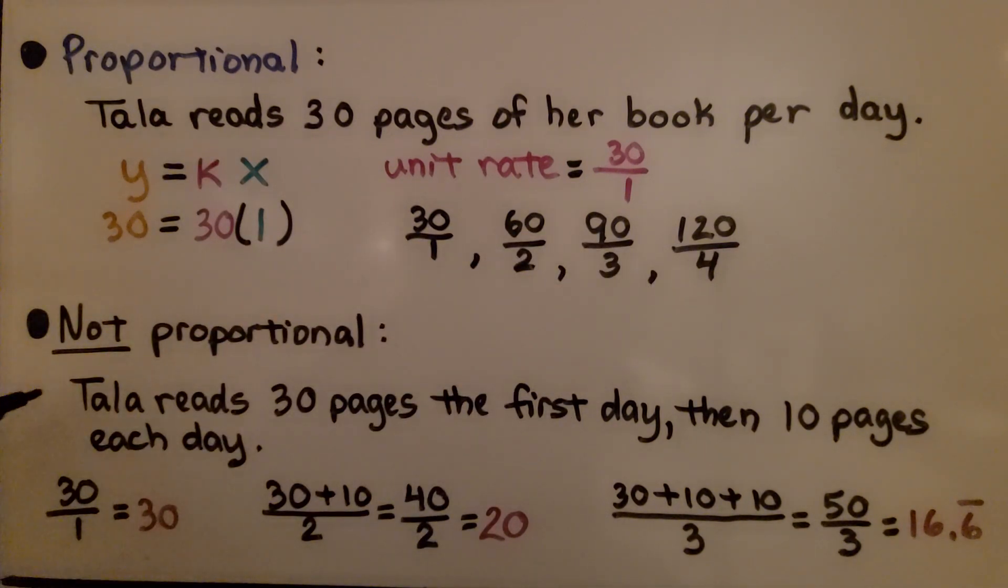Not proportional would be Tala reads 30 pages the first day, then 10 pages each day. She would start at 30 pages in one day. The second day, she has the 30 pages plus 10, that's 40 total pages in two days, that's 20. The third day would be 50 divided by 3, that's 16.6 repeating. We can see that k is not constant. That constant of proportionality isn't there. We've got different numbers for k, so it's not proportional.